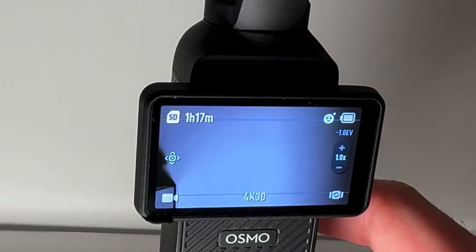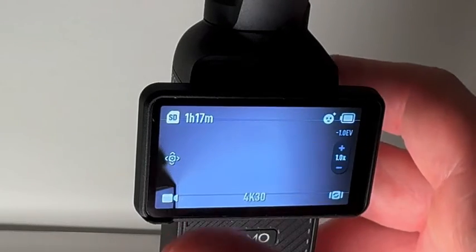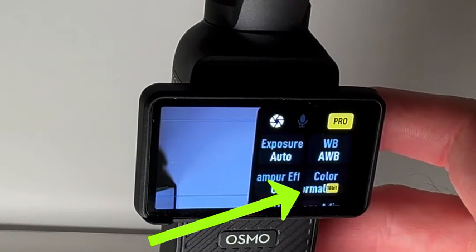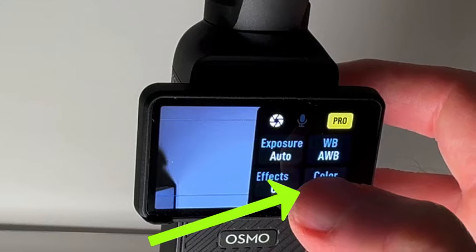Then swipe to the right to access the Pro settings. Click on where it says color and change this to D-Log M 10-bit.